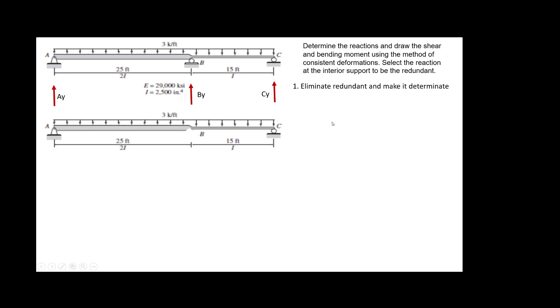The basis of the principle, remember, is applying compatibility equations in order to find the redundancy that we don't know. So first, second step is calculate the deflection at the point where you are eliminating the reaction. How do we do that?